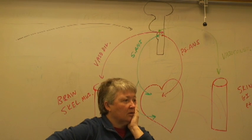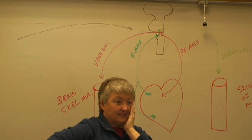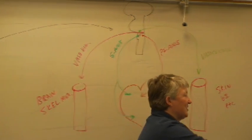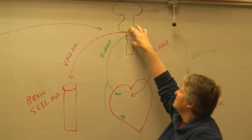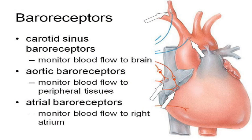Where are these baroreceptors — these blood pressure sensors? You've got one in the carotid sinus, basically the beginning of the carotid artery, which detects blood flow to the brain, making sure enough blood is going to the brain. You have baroreceptors in the beginning of the aorta, which monitor blood flow to everything else — is blood pressure high enough to perfuse all of the rest of the tissues? And then you've got some receptors in the right atrium monitoring how much blood is coming back, basically monitoring venous return.